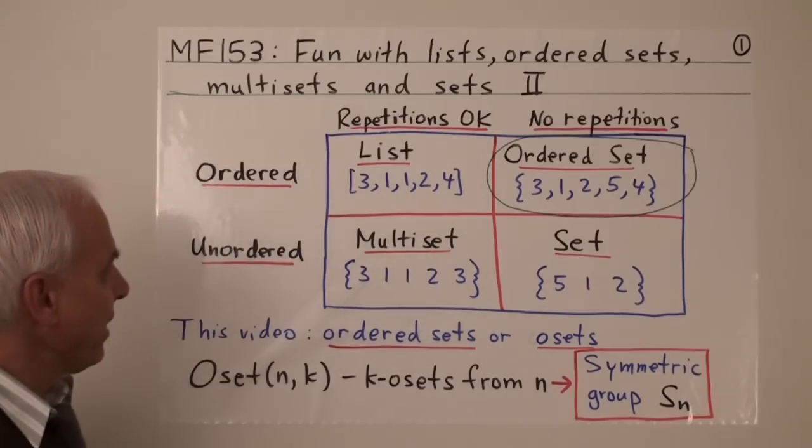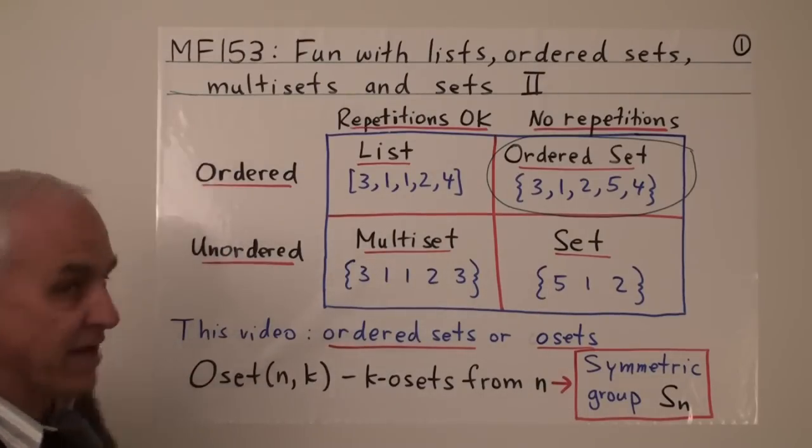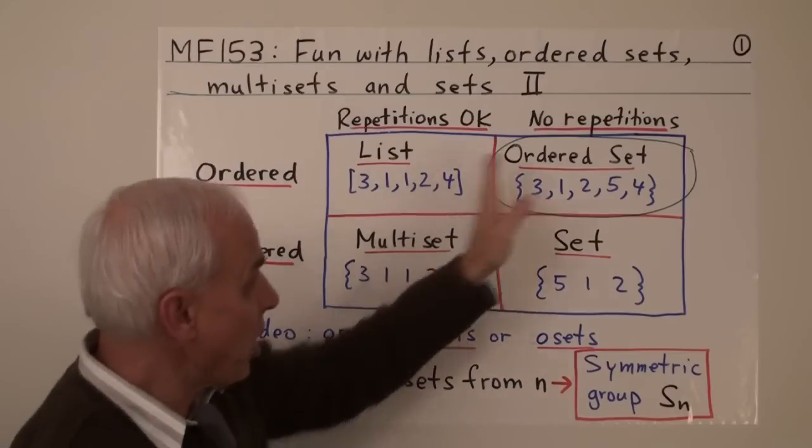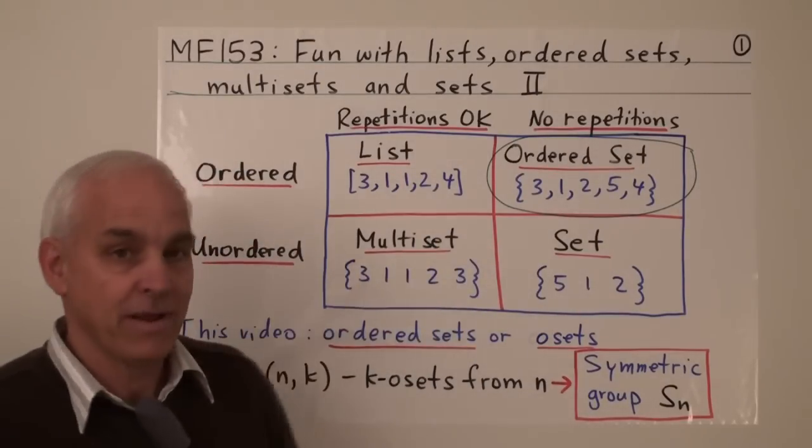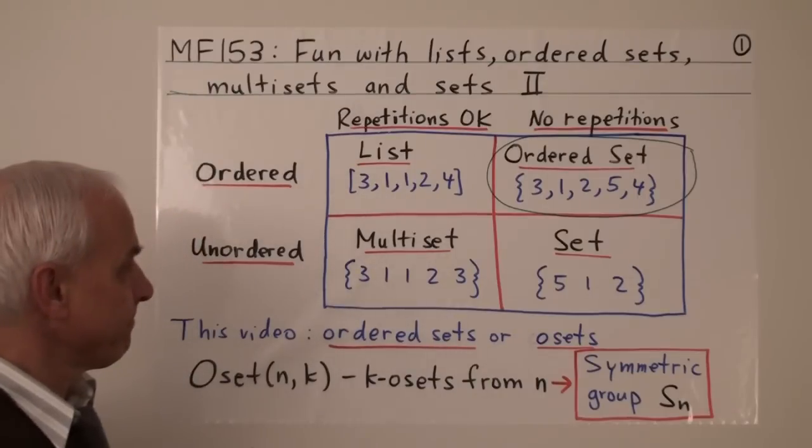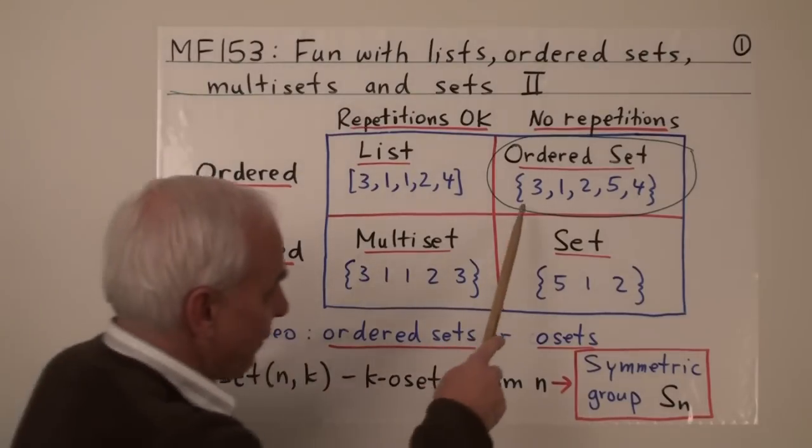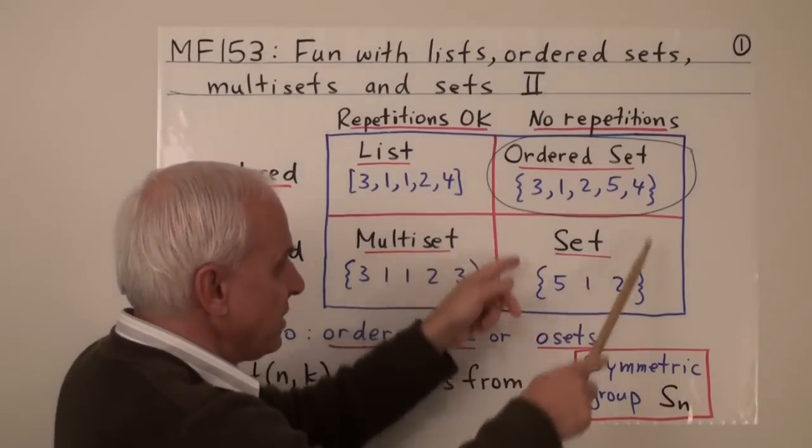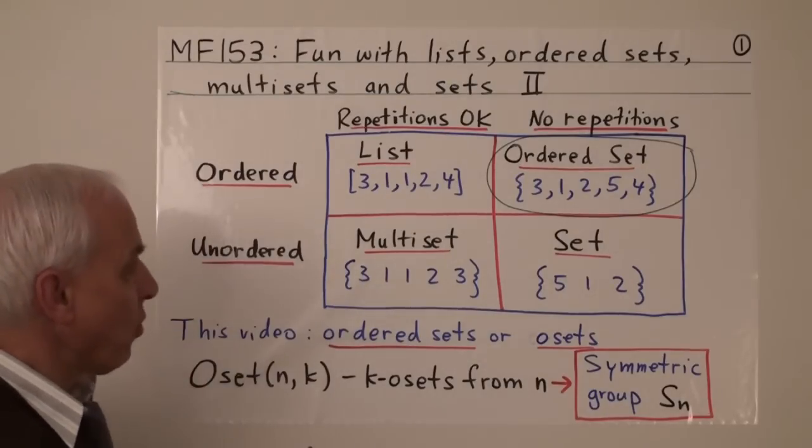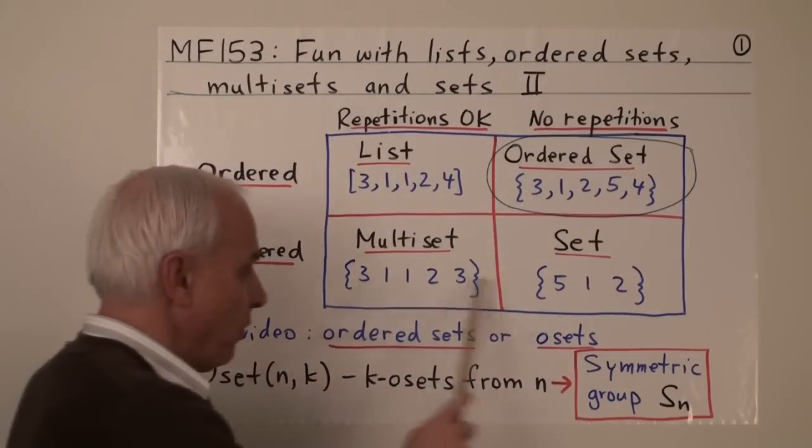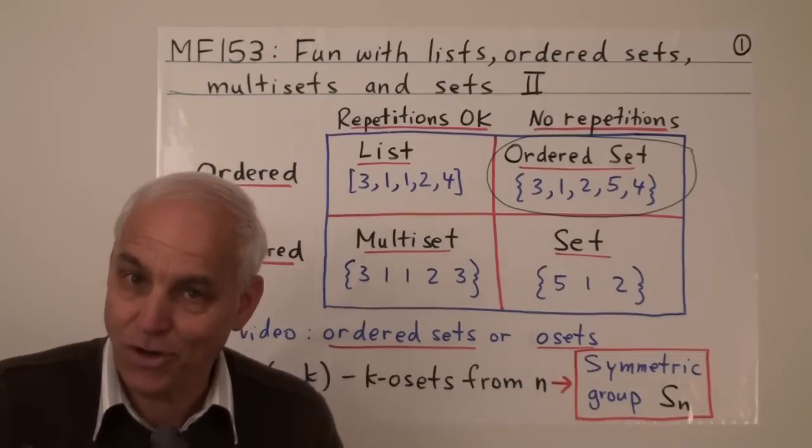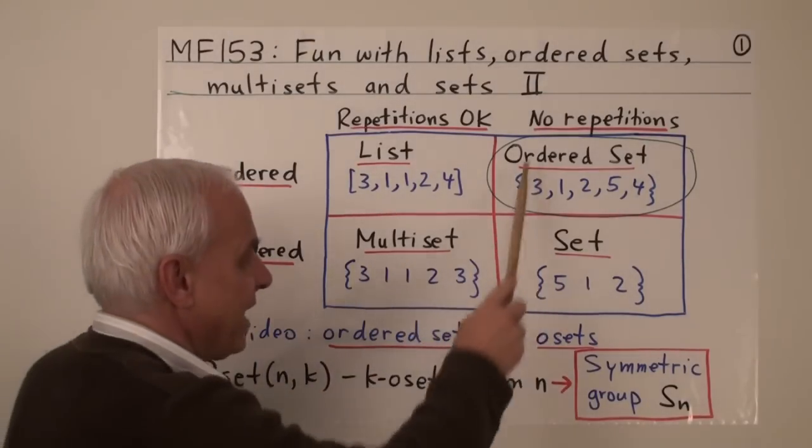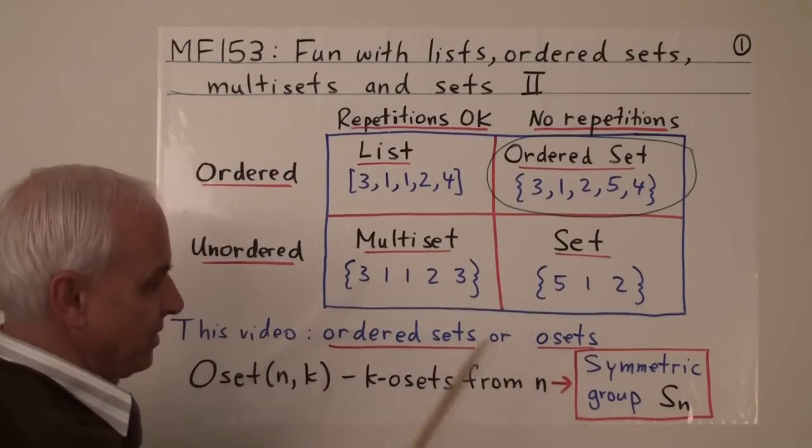Ordered sets come about when we decide that we're going to have our data structure with an order as opposed to unordered, and where we decide that we're not going to allow repetitions as opposed to allowing repetitions. So here's an example of an ordered set. Our notation is that when we don't allow repetitions we use these braces and when we have something that's ordered we have commas. If it's unordered we don't have commas. So this is an unconventional approach to our notation.